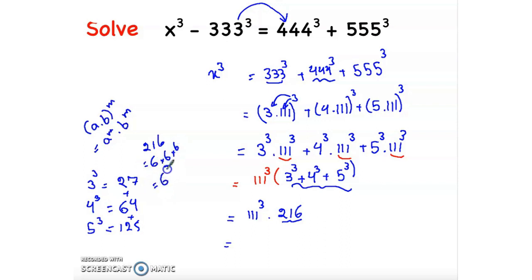And 216 equals 6 times 6 times 6 cubed, so 111 cubed times 6 cubed, which is equal to 111 times 6 all cubed, equal to 666 cubed.